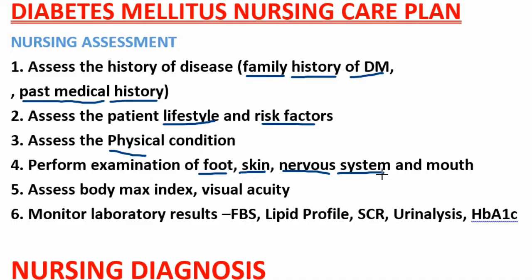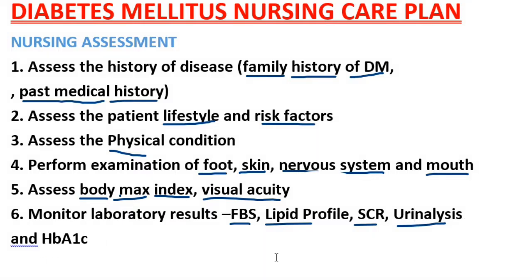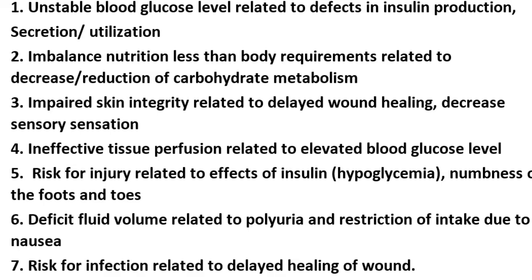5. Assess body mass index and visual acuity. 6. Review laboratory results: fasting blood sugar, lipid profile, serum creatinine, urine analysis, and HbA1c. 7. Unstable blood glucose level related to defects in insulin production, secretion, and utilization.